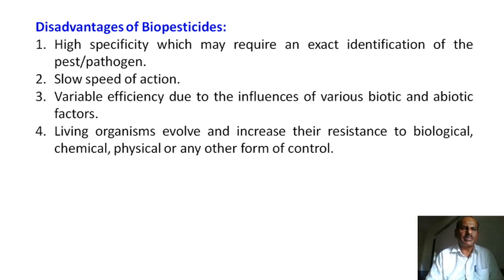What are the disadvantages of biopesticides? Generally, biopesticides — which are extracts of plants or other materials — are specific to certain types of pathogens or microorganisms that they control. They also have a very slow speed of action. The concentration is lower, and control happens very slowly. There is variable efficiency due to the influence of various biotic and abiotic factors, and the required concentration may be higher.